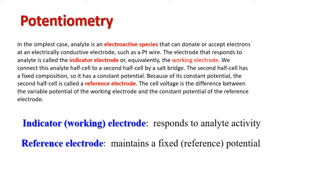The cell voltage is the difference between the variable potential of the working electrode and the constant potential of the reference electrode. So now, the indicator or working electrode responds to analyte activity, or responds to analyte concentration. The reference electrode maintains fixed reference potential.